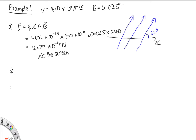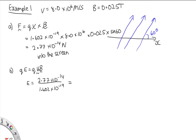Part B: describe the electric field needed to keep the electrons traveling with constant velocity. We need to balance the magnetic force with an electric force, so QE = QV × B. The field strength equals the magnetic force (2.77 × 10⁻¹⁴ N) divided by the charge on the electron (1.602 × 10⁻¹⁹ C), giving 1.73 × 10⁵ N/C. It needs to oppose the magnetic force — since the magnetic force is into the screen, we need the electric field also directed into the screen so that the positive charges pull it back out.